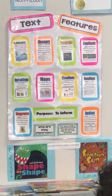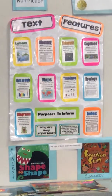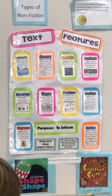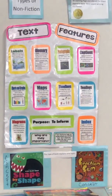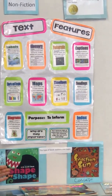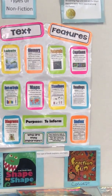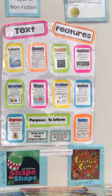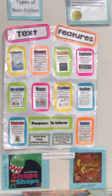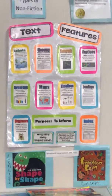You also have concept books. A concept book is usually for younger kids and it talks about just one topic. The title is Shape by Shape — can anybody tell me what the concept is? It's about shapes. That's right, it's shapes.